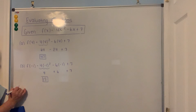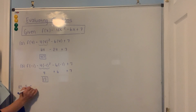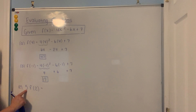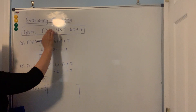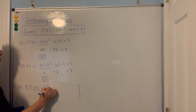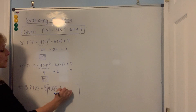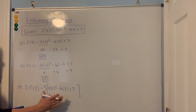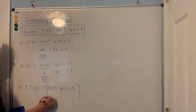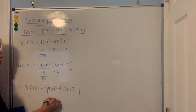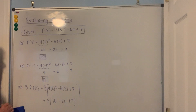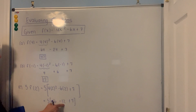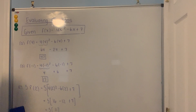Part c: I added something extra — I put a number in front of f of 2. That number 5 in front is the coefficient, so you start off with the number 5, but the rule is you fill in the number 2 for all the x's on the right hand side. So it's 4 times 2 squared minus 6 times 2 plus 7. 2 squared is 4, times the coefficient is 16. Negative 6 times 2 is negative 12, and then plus 7. 16 minus 12 is 4, and 4 plus 7 is 11.